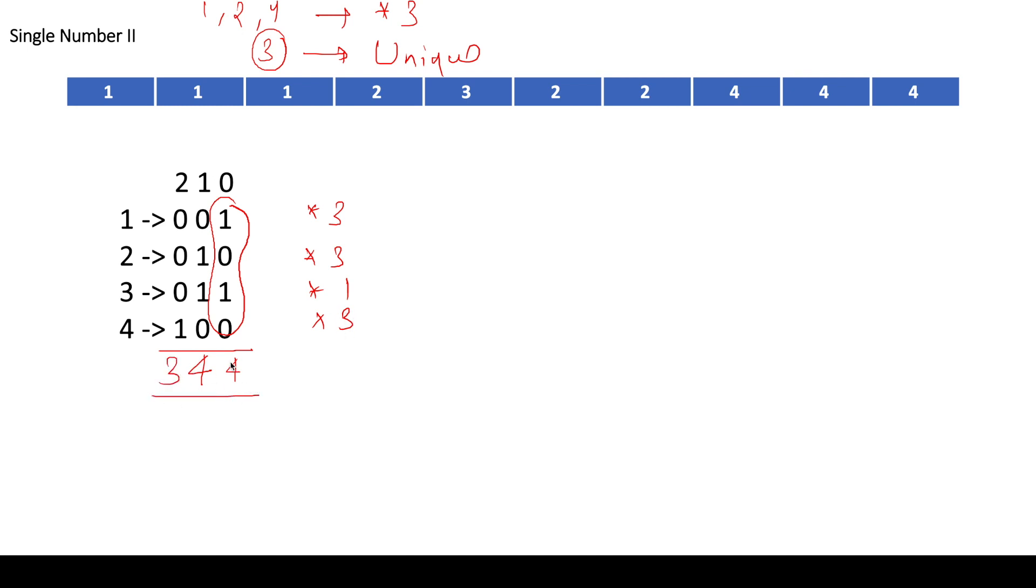Now, one important point over here is these sums, that is sum of 0th bit or sum of 1th bit or the sum of 2th bit or so on. These sums are actually going to be of the format of 3n or 3n plus 1. Why I am saying that 3n or 3n plus 1?